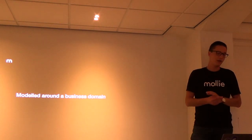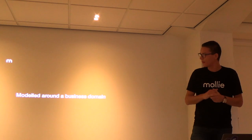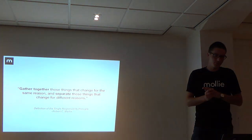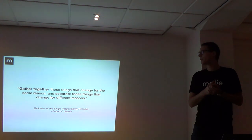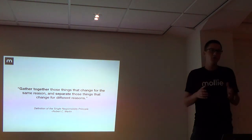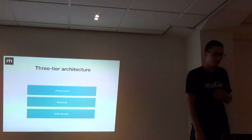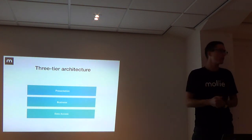The first subject I want to talk about is modeling around the business domain. This is actually the definition of the single responsibility principle: gather together the things that change for the same reason and separate the things that change for different reasons. A lot of you probably learned this type of architecture in school or at work - the three-tier architecture. Lots of businesses are built upon it: you have your presentation layer, business layer, and data layer.